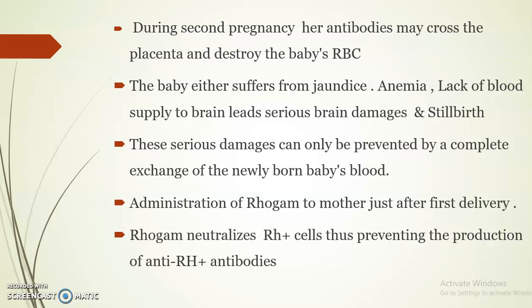During the second pregnancy, these antibodies may cross the placenta and destroy the baby's RBCs. The baby may suffer from jaundice, anemia, lack of blood supply to the brain leading to serious brain damage, and even stillbirth. These serious damages can only be prevented by a complete exchange of the newborn baby's blood. Administration of Rogam — that is anti-Rh antibodies — to the mother just after the first delivery can prevent this damage. Rogam antibodies neutralize the Rh positive cells in the mother's circulation and prevent the production of anti-Rh antibodies.